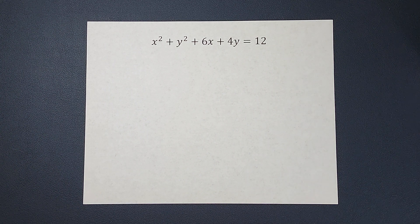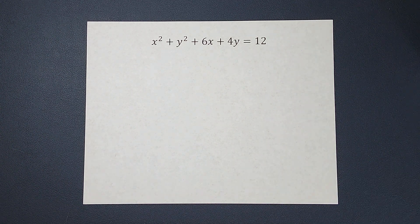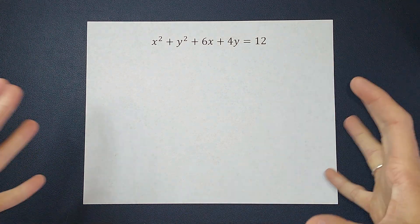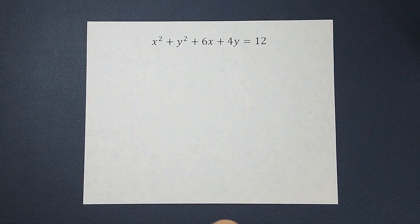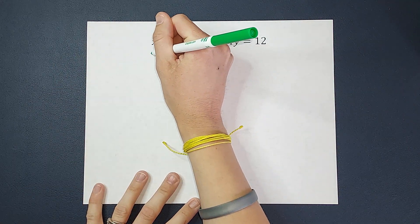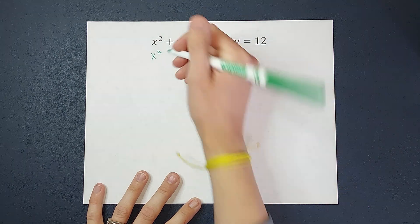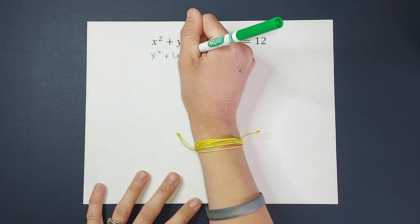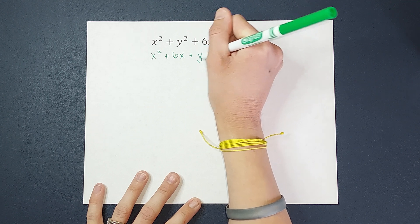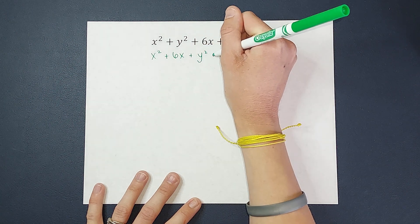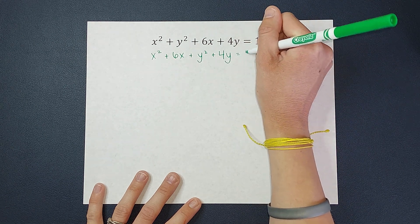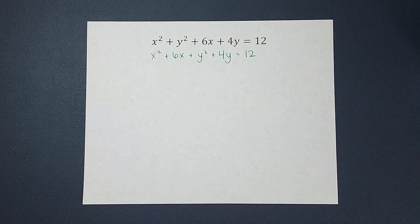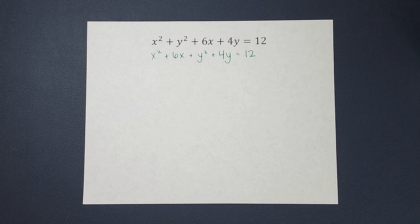The first thing I'm going to do to get it to standard form is I'm going to group my x's together and my y's together. So I'm just moving things around. I'm going to rewrite this as x squared plus 6x plus y squared plus 4y, and we're still equal to 12. So I didn't change anything, I just moved things around.